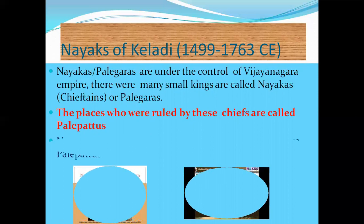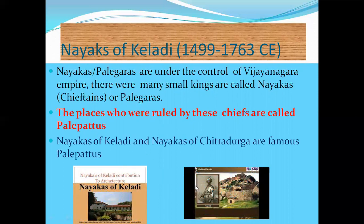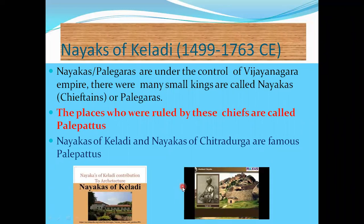The places ruled by these chiefs are called Palapatos (Palagara regions). For example, the Nayakas of Keladi and the Nayakas of Chitradurga are famous Palapatos. So the place ruled by these chiefs is called a Palapato.